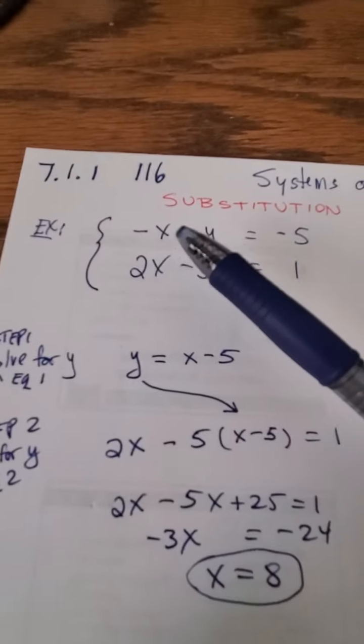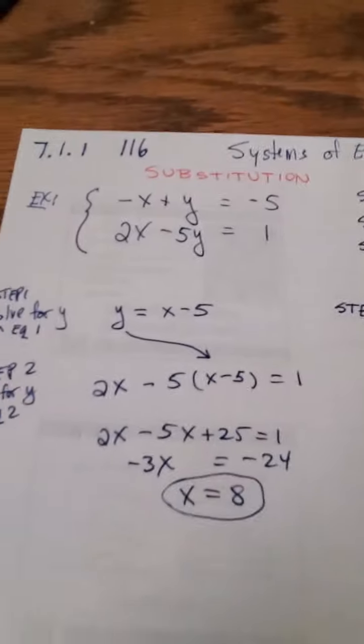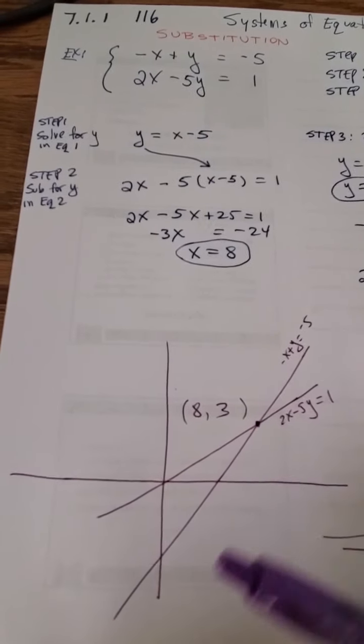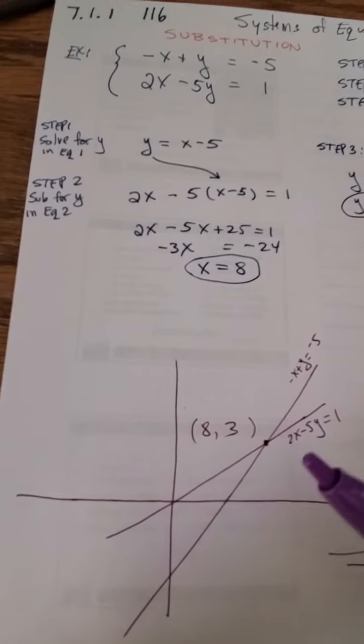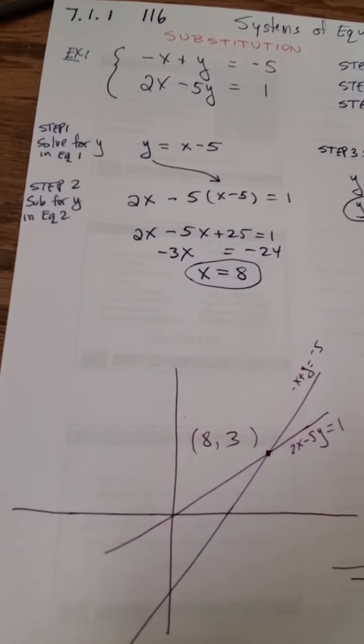This means graphically, by the way, if I were to graph these two equations - so one line would look like this, the other line look at that - by the way, it doesn't actually go through the origin, it goes close to the origin but not through.